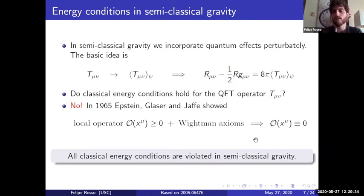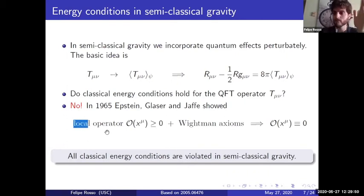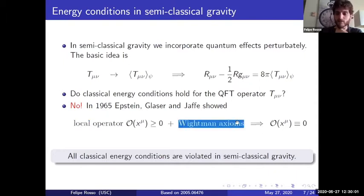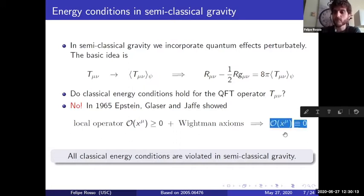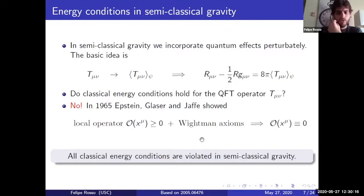The clearest proof of this was given by Epstein, Glaser and Jaffe in 1965. They showed that if you have a local operator and you impose a positivity condition on that local operator, assuming Wightman axioms for a QFT in Minkowski, you can show that this local operator is actually trivial — it vanishes. This strong result tells us that all classical energy conditions are violated in semi-classical gravity.